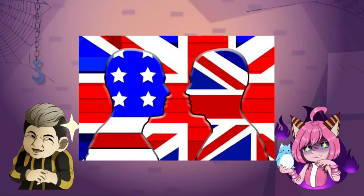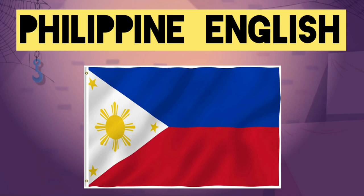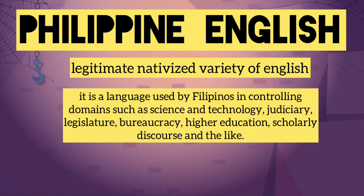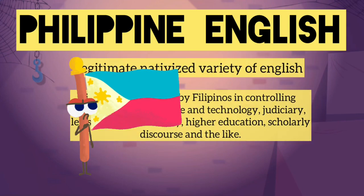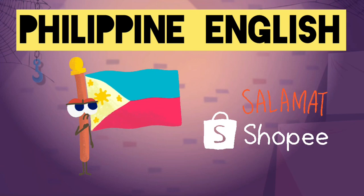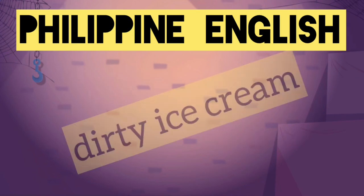There you have it — those are some of the differences between American English and British English. How about in the Philippines? We also have our own variety of English, known as Philippine English or Filipino English. It is the English language as used in the Philippines, a state of Southeast Asia consisting of more than 7,000 islands. Philippine English is a legitimate nativized variety of English, used by Filipinos in controlling domains such as science and technology, judiciary, legislature, bureaucracy, higher education, and scholarly discourse.